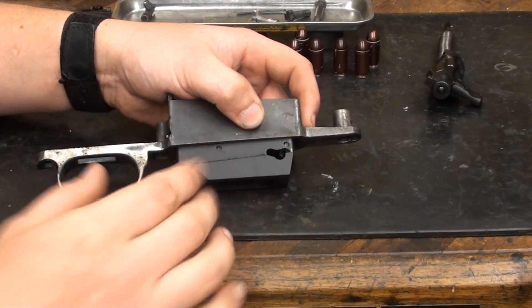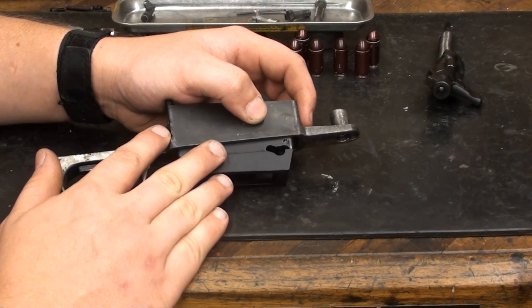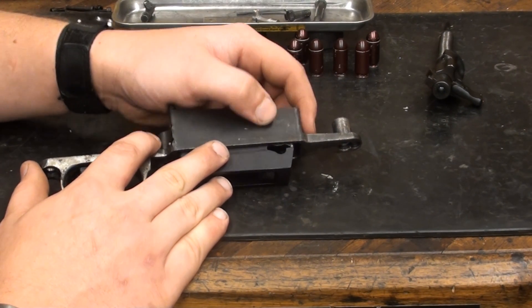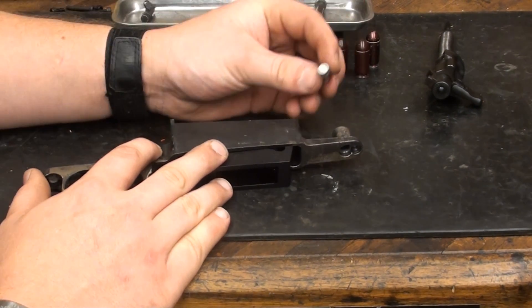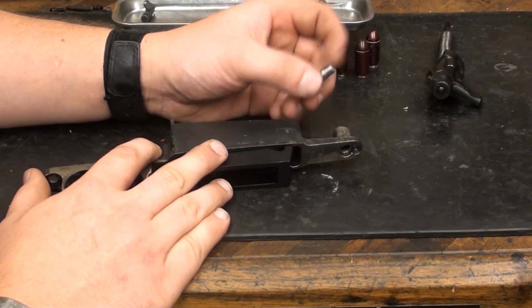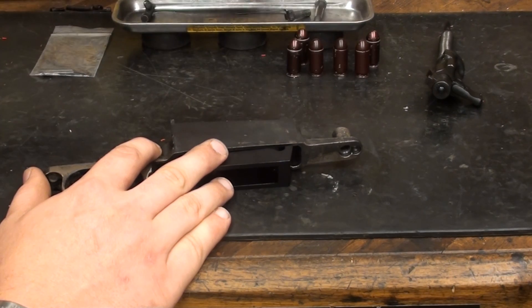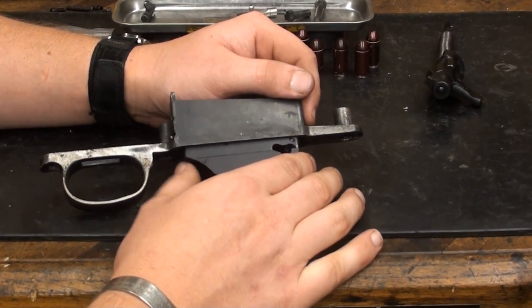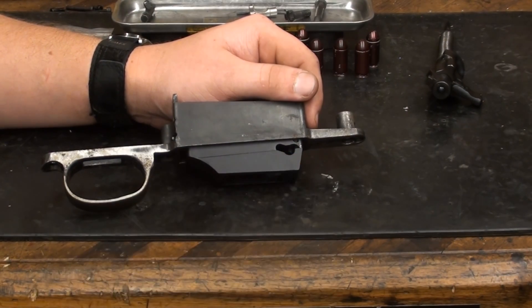Now, I forgot to mention before, you will need an extended 1911 magazine catch assembly that does not come with the conversion kit. The reason they recommend an extended one is obviously because of the thickness of the stock, it makes it a little bit easier to get to. You will need to inlet the stock, but we're going to do that all at the same time. I'm going to go ahead and make my hash marks, and we'll start our file work.